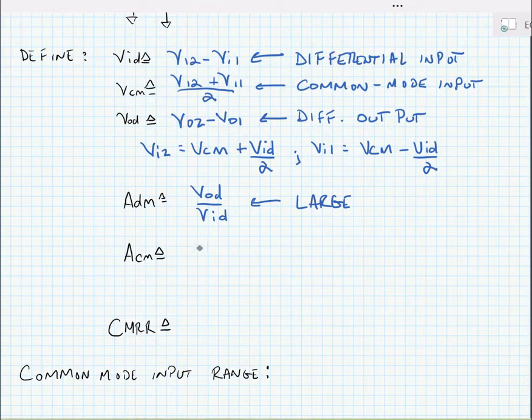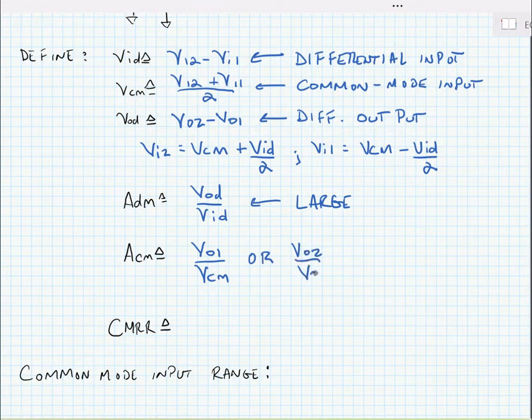And the common mode gain is equal to VO1 over VCM or VO2 over VCM. Ideally, these values should be small. In other words, the differential amplifier, we want to amplify differential signals and reject common mode signals.